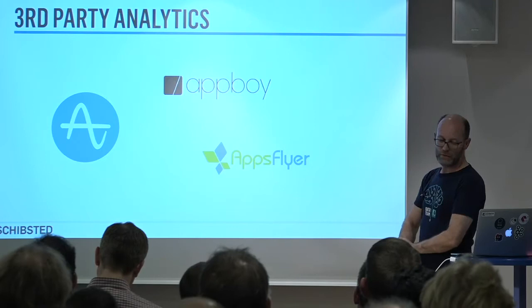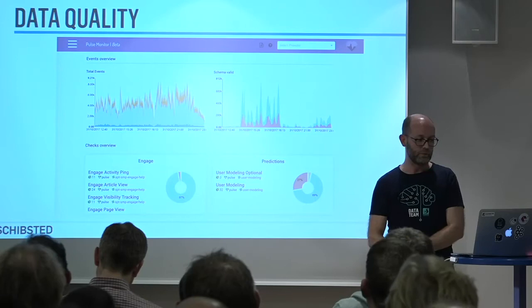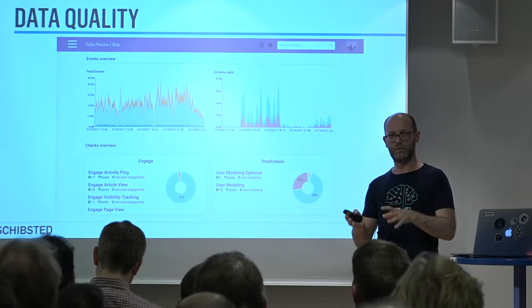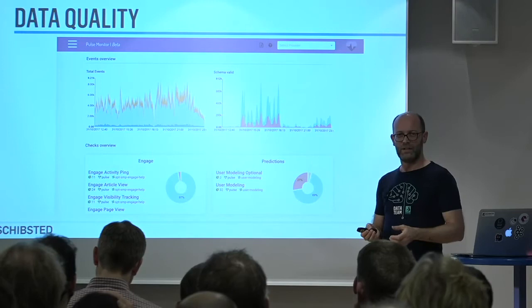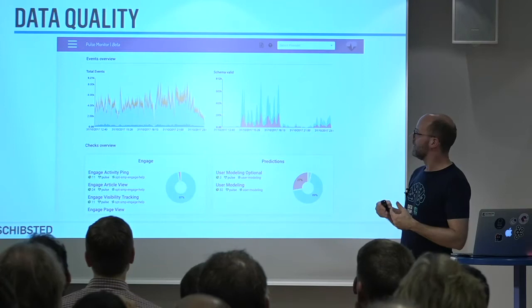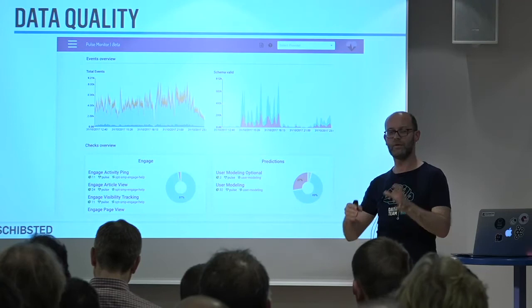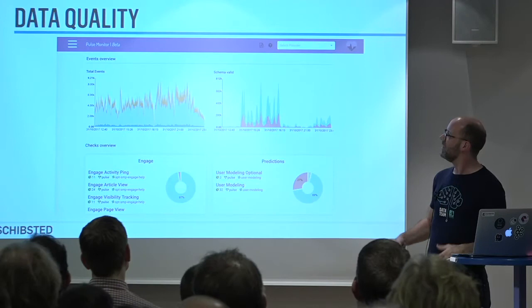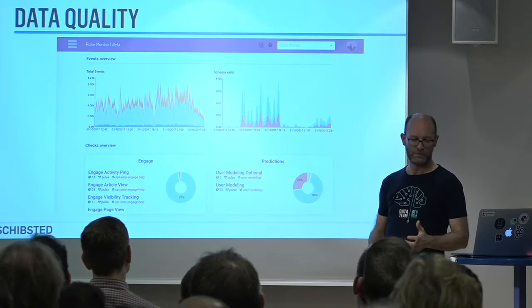We've also built data quality analysis tooling on top of this. We built a Kafka Streams application that takes incoming events and analyzes their quality — for example, checking whether they match the specified schema. Since we're sending JSON, there's no guarantee sites have done this correctly. The tooling allows people to submit their own tests. Different downstream consumer teams can specify what they expect an event to look like. We now have about 100 tests running per event, submitted by many different teams into this common data quality tool.